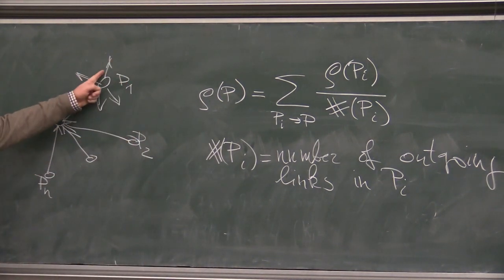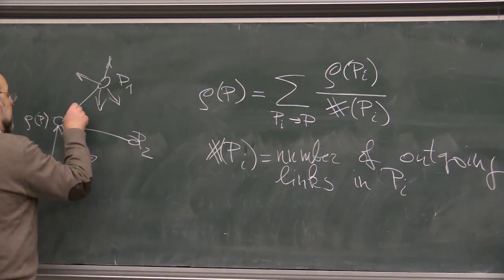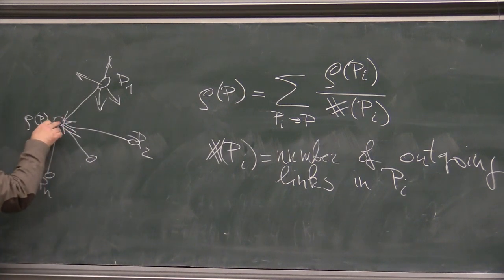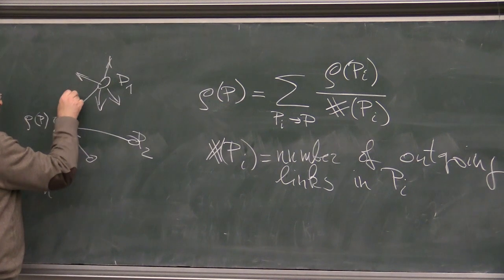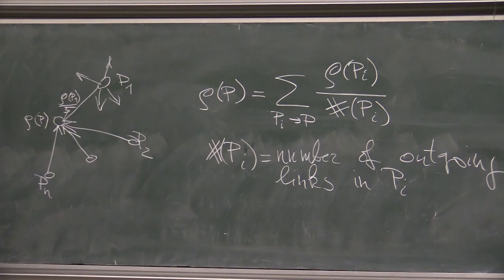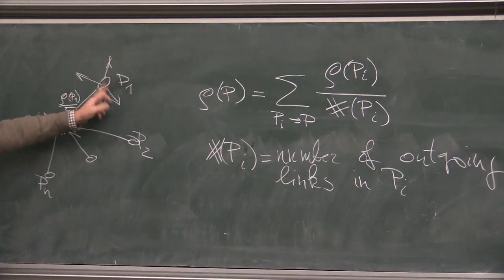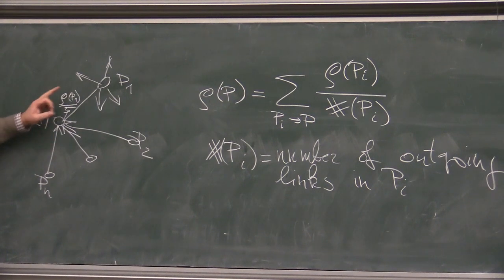So you would want to have your rank to be sum total of the ranks of the web pages that point to your web page, but prorated with the number of outgoing links on that web page. So you would want to have a lot of people on that web page, so divided by, let's call, sharp PI.